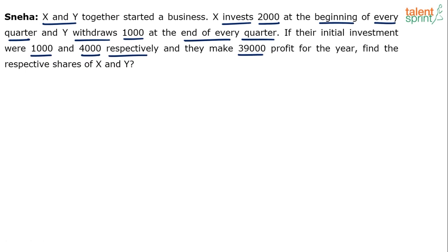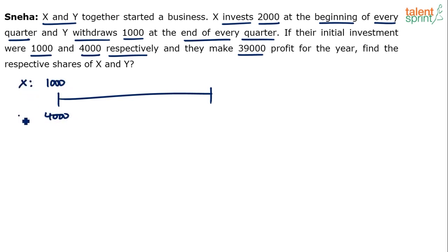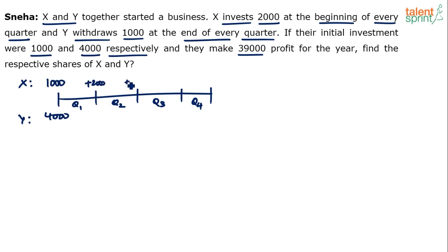How do you do this? Simple. Understand that there is some change happening at every quarter. So when they start, they have invested 1,000 and 4,000 — that's X and Y respectively at the beginning of quarter 1. Divide the whole year into four quarters: Q1, Q2, Q3, Q4. X invests 2,000 at the beginning of every quarter — not quarter 1, since the start of the year was when he invested 1,000. After that, he adds 2,000 at the beginning of Q2, another 2,000 at the beginning of Q3, and another 2,000 at the beginning of Q4.